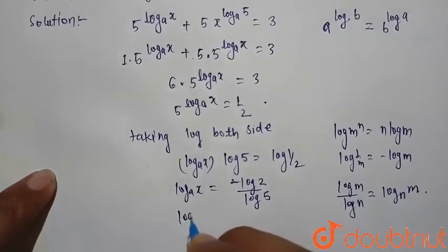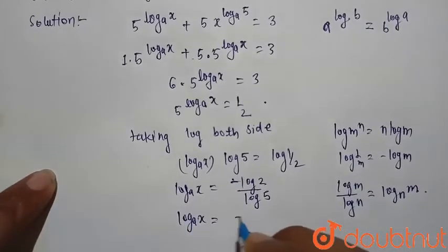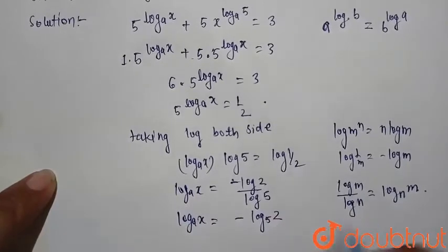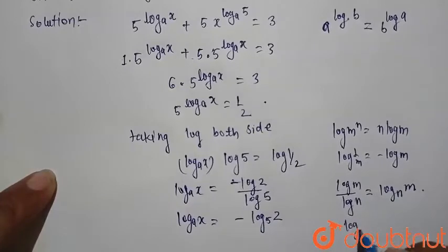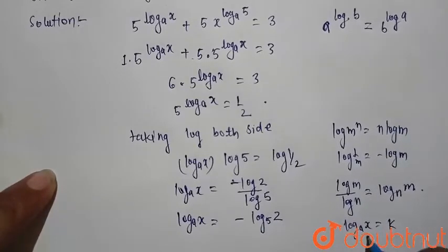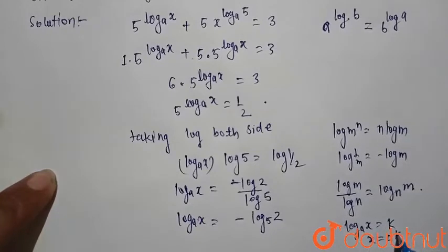Here we can write log a x equals minus log 5 2, and we know that if log a x equals any value k, then x equals a raised to power k.